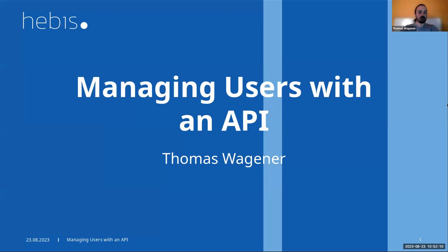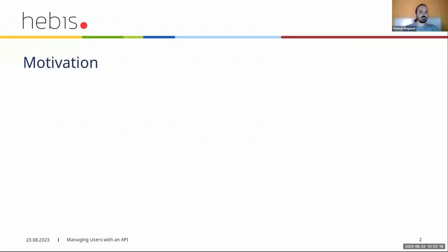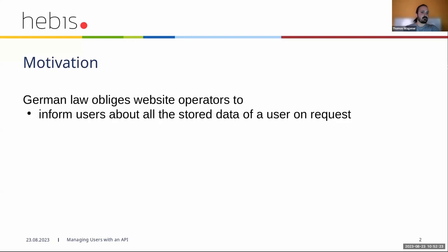The third topic we want to talk about is managing users with an API. In Germany, the law obliges website operators to first inform users about all their stored data in the database, or any stored data actually. And you have to give them this information on request.